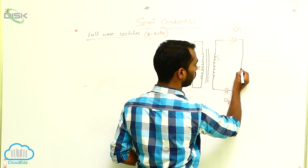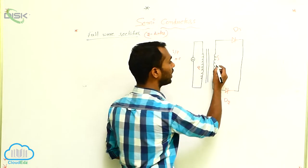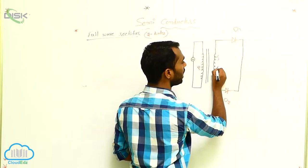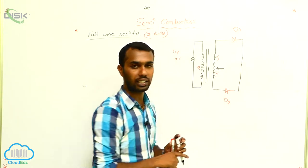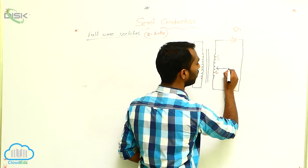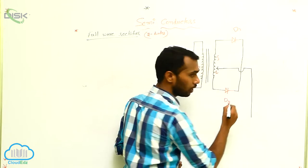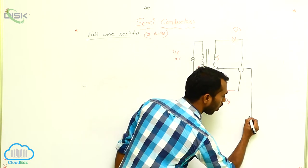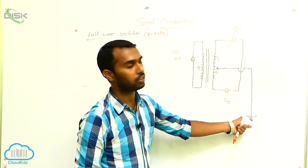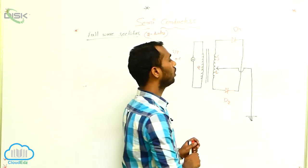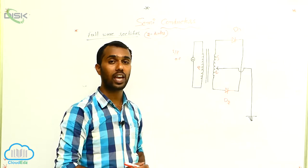Now I have to connect one more thing — that is C, where C is the center tapped transformer. I explained the center tapped transformer in this class. Here I am connecting the center tapped transformer to the ground. This symbol is called grounding.